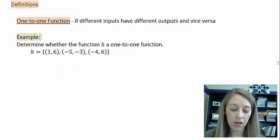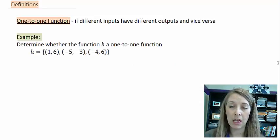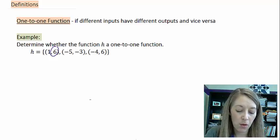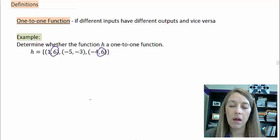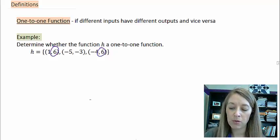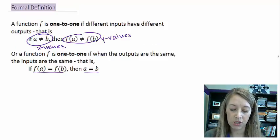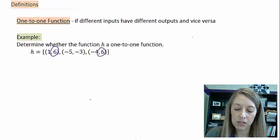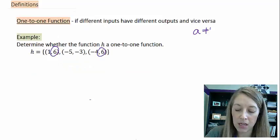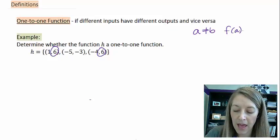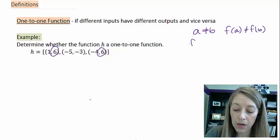We saw this example previously, and we just looked at it and we knew it was not one-to-one, because we saw that we had repeat y values. But now let's explore this by using our formal definition. So, that definition says, if a is not equal to b, then f of a is not equal to f of b. Or, if f of a is equal to f of b, then a is equal to b.